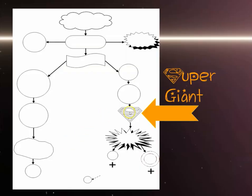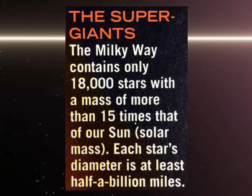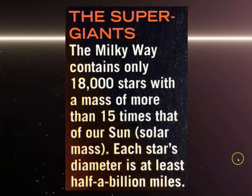Then we have a supergiant — an actual term, sometimes written as one word. Supergiants are 15 times more massive than our Sun and each star has a diameter of about half a billion miles.